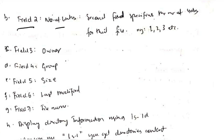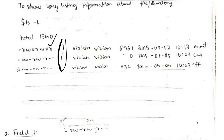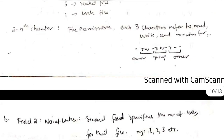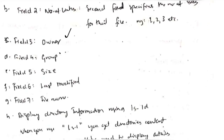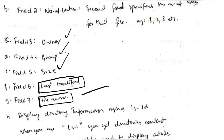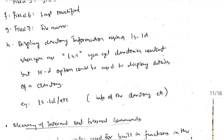Field number 2 is the number of links — how many links are there for that particular file, here we have one. Field 3 is owner, field 4 is group, field 5 is size. We also have the date which is last modified, and the 7th field is the file name. Lastly, 'ls -ld' will display directory information — if I write 'ls -l' I get the files, but if I write 'ls -ld' it will display the list of directories.